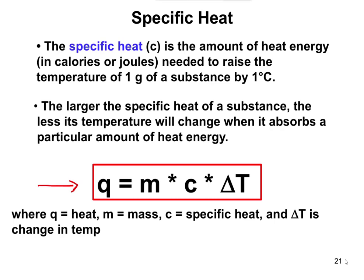Q will be in calories or joules. The specific heat is represented by C, and it has units of calories per gram degree Celsius, or joules per gram degree Celsius — in other words, how much heat is needed to raise a gram by a degree Celsius. M is going to be the mass in grams, because your units have to match what you have in the specific heat.